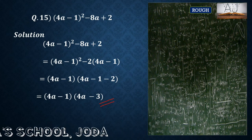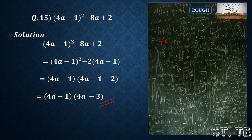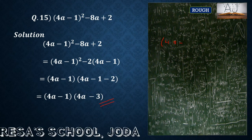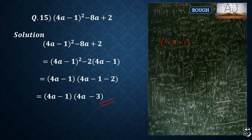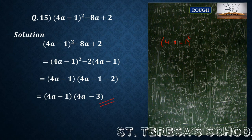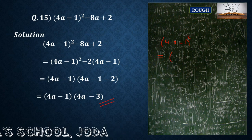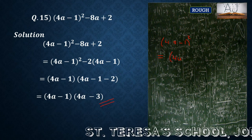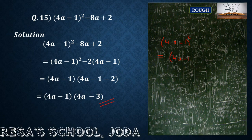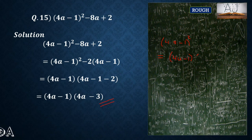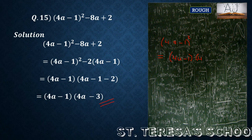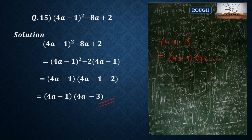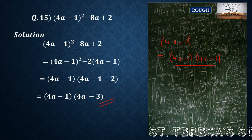You know what (4a minus 1) whole square actually means. Square means multiply 2 times. So (4a minus 1) whole square means (4a minus 1) multiplied 2 times, that is (4a minus 1) into (4a minus 1). Similarly, if it is whole cube, it means 3 times multiplied.